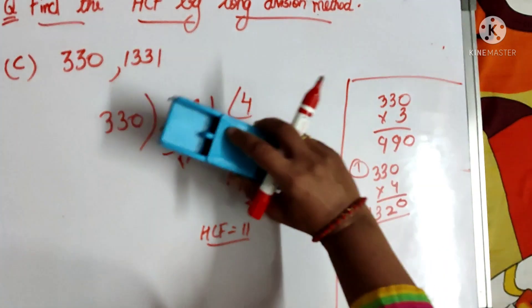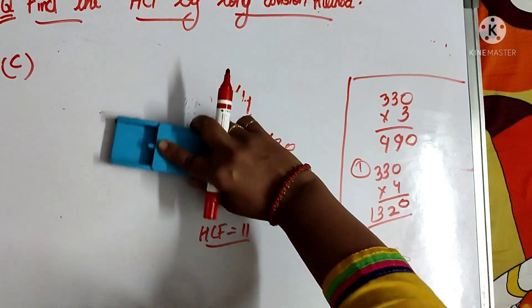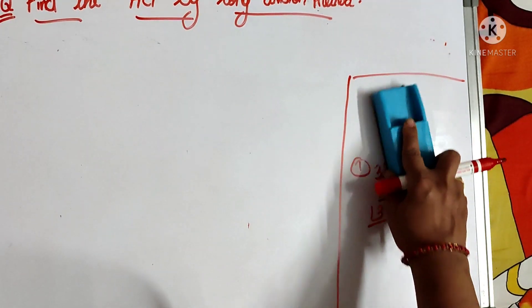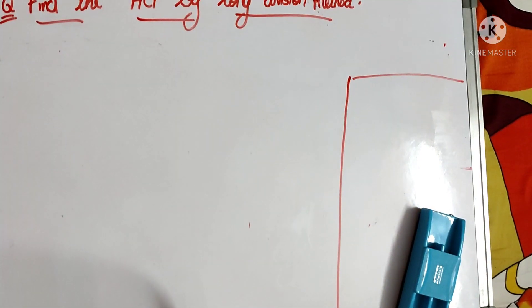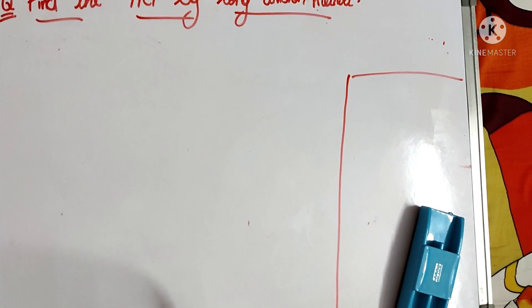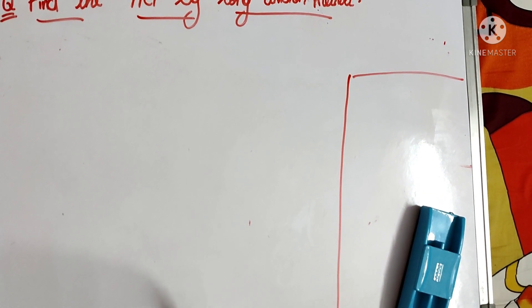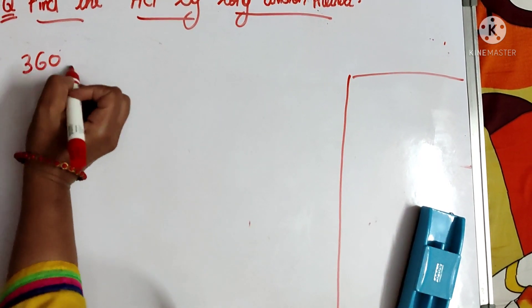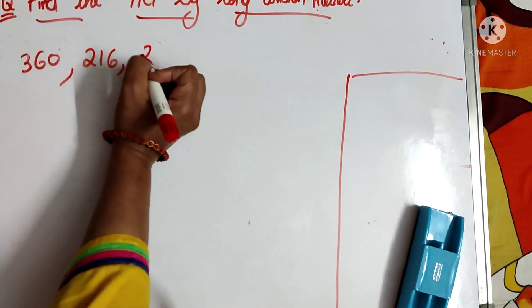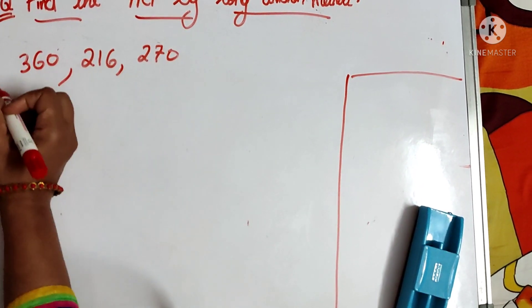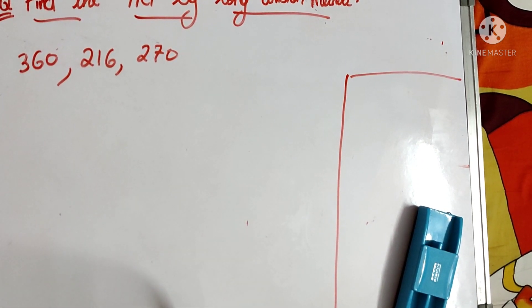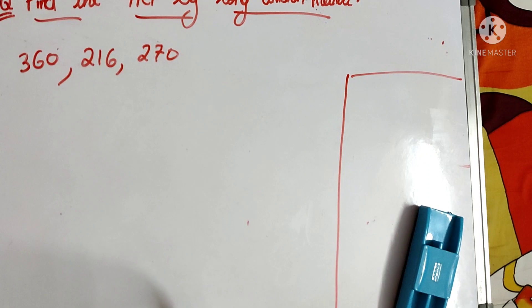Now let me take an example with more than 2 numbers. Suppose you have to find the HCF of 360, 216, and 270. How are we going to solve this?